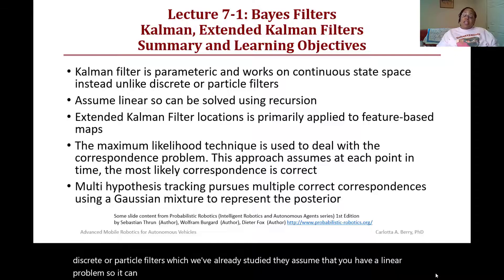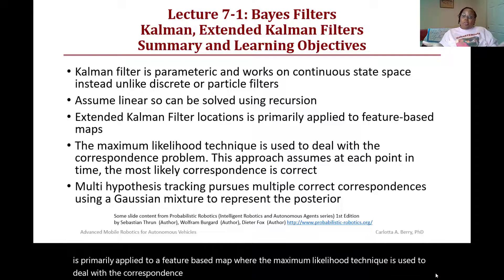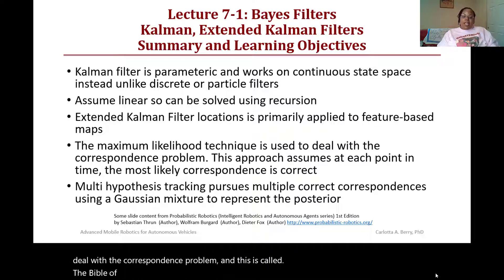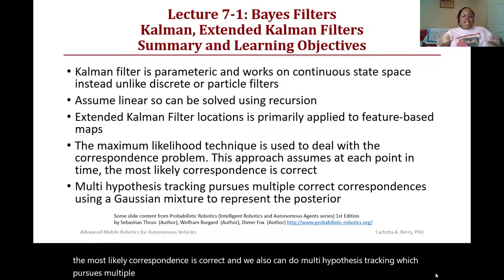A Kalman filter is parametric and works on a continuous state space system, unlike discrete or particle filters which we've already studied. They assume that you have a linear problem so it can be solved using recursion and matrices. The extended Kalman filter localization is primarily applied to a feature-based map where the maximum likelihood technique is used to deal with the correspondence problem. This is called survival of the fittest, where this approach assumes at each point in time the most likely correspondence is correct. We also can do multi-hypothesis tracking which pursues multiple correct correspondences using a Gaussian mixture to represent the posterior.